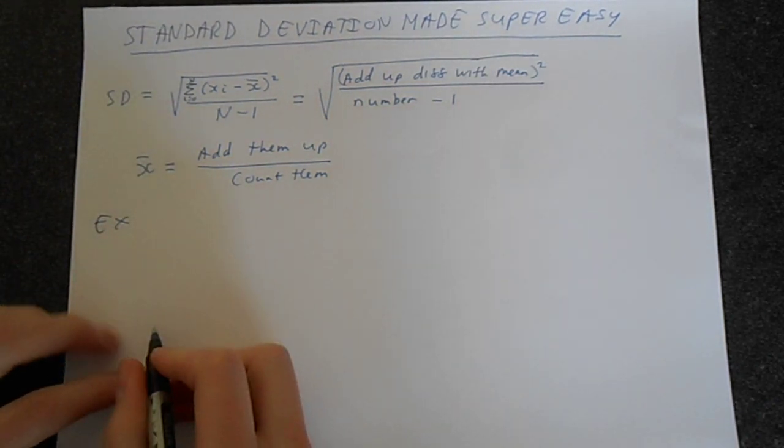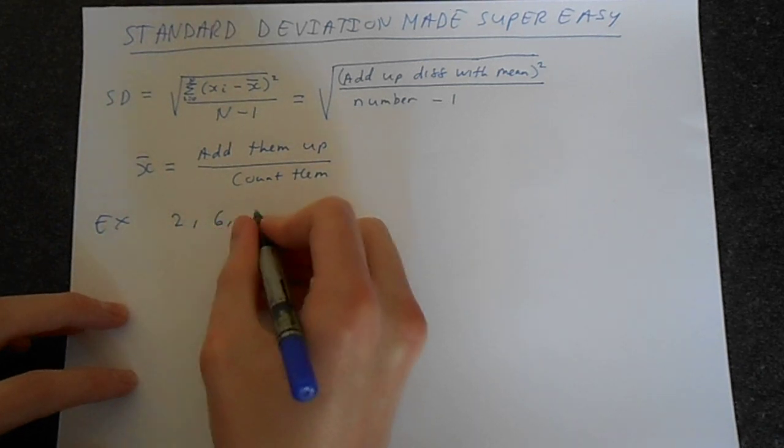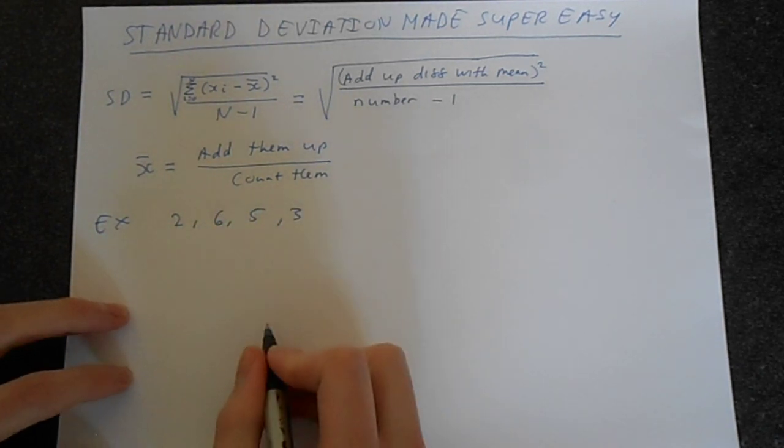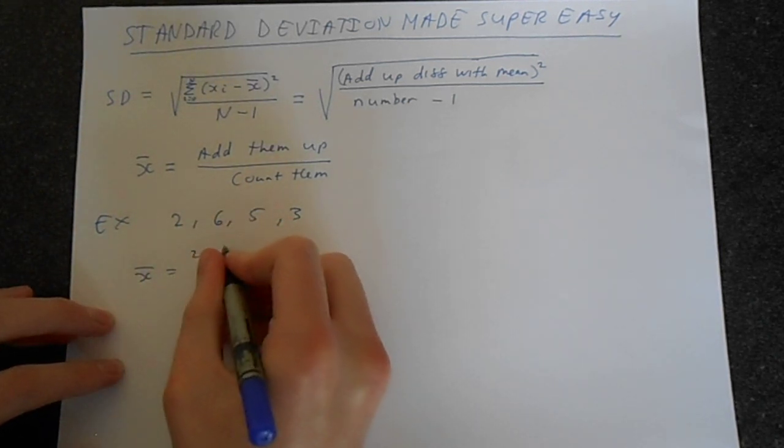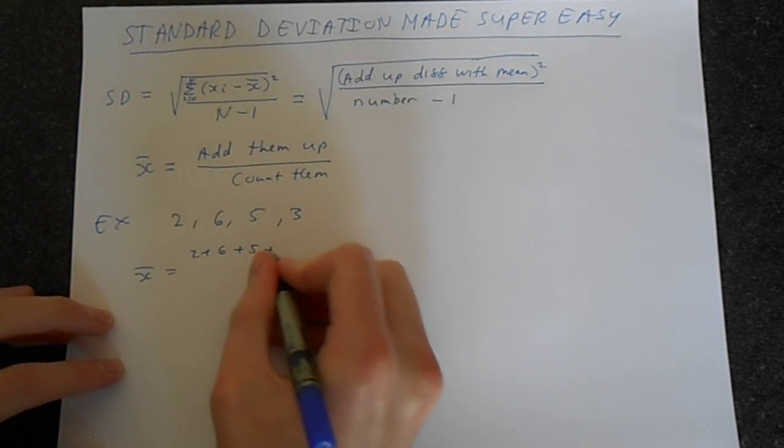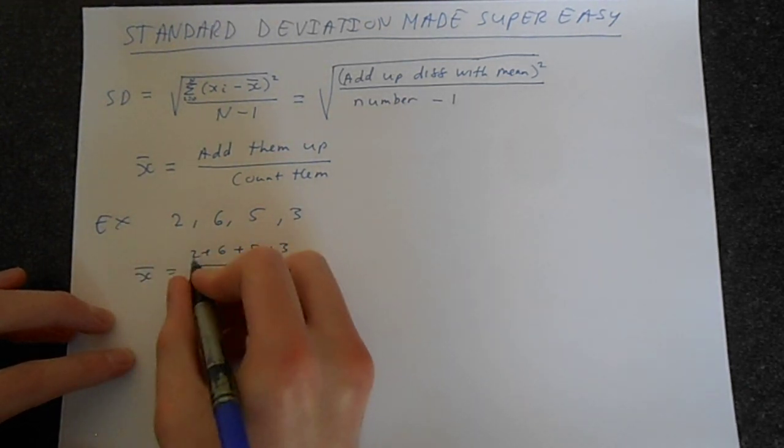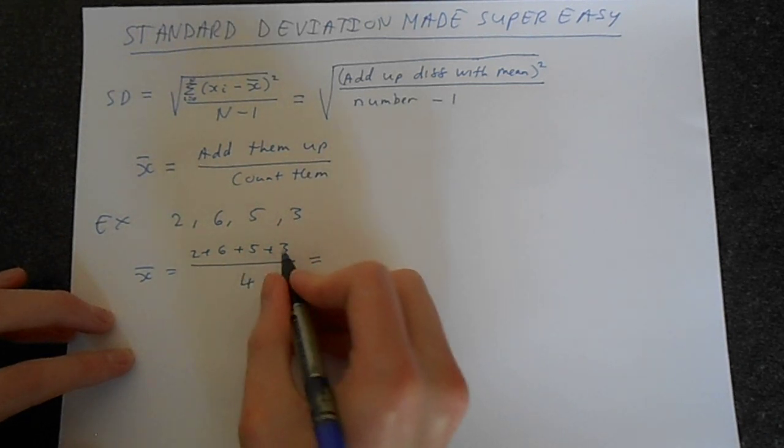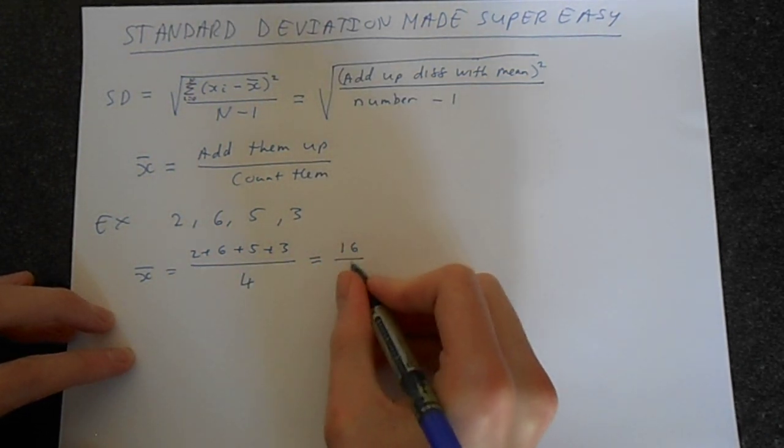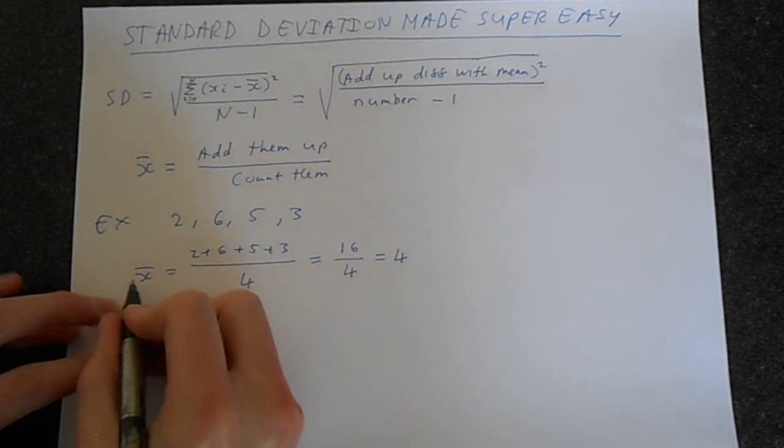Let's do an example just to show you this in practice. So let's take 2, 6, 5, and 3. So the mean, well, we're saying add them up. So 2 plus 6 plus 5 plus 3. Count them. 1, 2, 3, 4. And so we've got 2 plus 6 is 8. Plus 5 is 13. Plus 3 is 16. So we get 16 divided by 4. And that is, of course, 4. So the mean is 4.